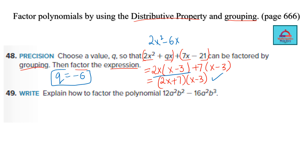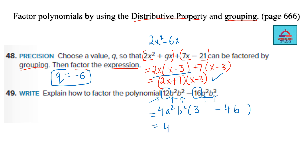This expression has only two terms. Look at 12 and 16 — the GCF (greatest common factor) is 4. Take it as common. Both terms share a², so a² is common, and b² and b³ share b². What remains in the bracket is (3 − 4b). So the two factors are 4a²b² and (3 − 4b).